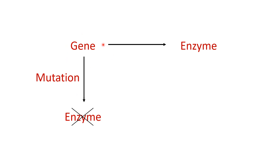Neurospora crassa has the ability to grow on complete medium as well as on minimal medium, which contains only salts. But due to mutation, the ability of Neurospora crassa to develop on minimal medium will stop — it will only develop on complete medium.